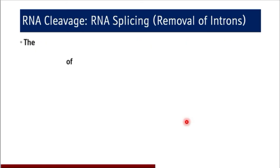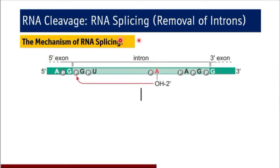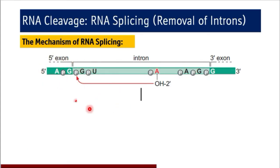Coming to the mechanism of RNA splicing. This is a complete hnRNA — this is the exon part, this is also the exon part, and this is the intron part in the middle of the hnRNA molecule. As we discussed, there are four mechanisms of identifying the splice junctions. These are the GU at the start and AG at the end. This adenine at the branch site — the branch site here — is around 40 nucleotides upstream of the 3' end of the intron. There are splicing enhancers and splicing silencers also present in the intronic sequence.